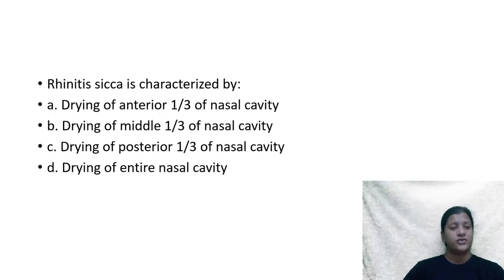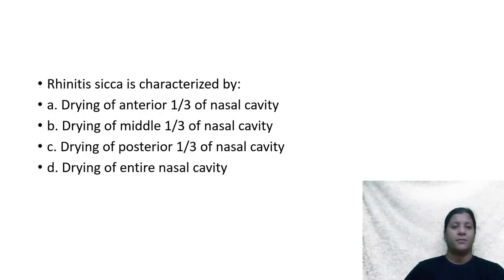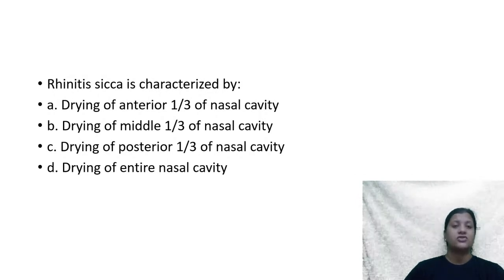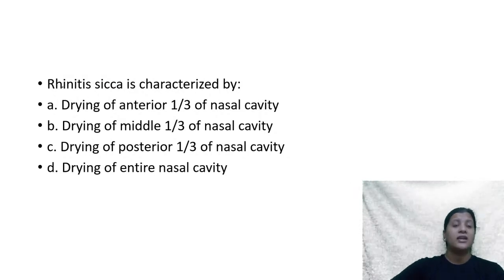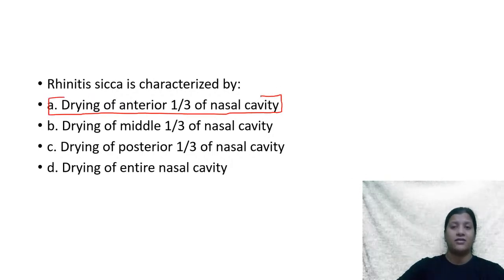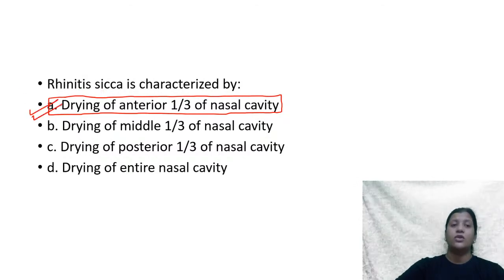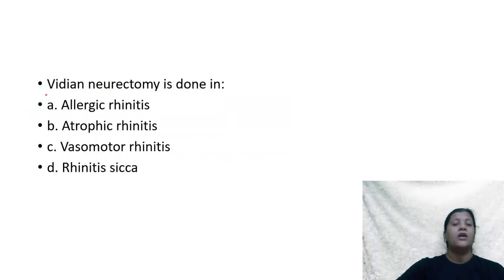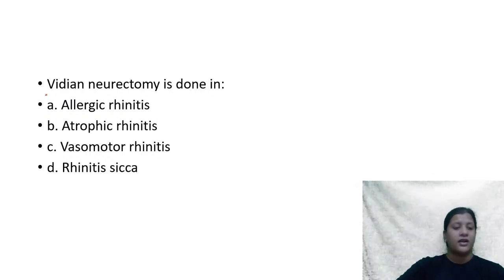Rhinitis sicca is characterized by — (A) drying of the anterior one-third of the nose, (B) middle one-third, (C) posterior one-third, or (D) the entire nasal cavity? Rhinitis sicca is typically seen in those exposed to chronic dry air currents, such as bakers or people in deserts. It is differentiated from atrophic rhinitis by affecting only the anterior one-third of the nasal cavity, not the middle, posterior, or entire cavity.